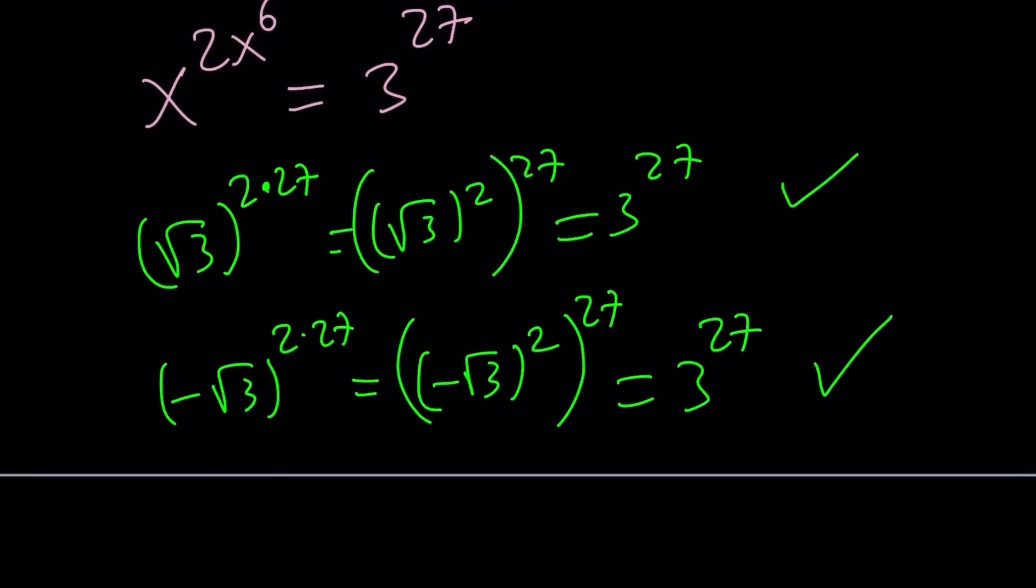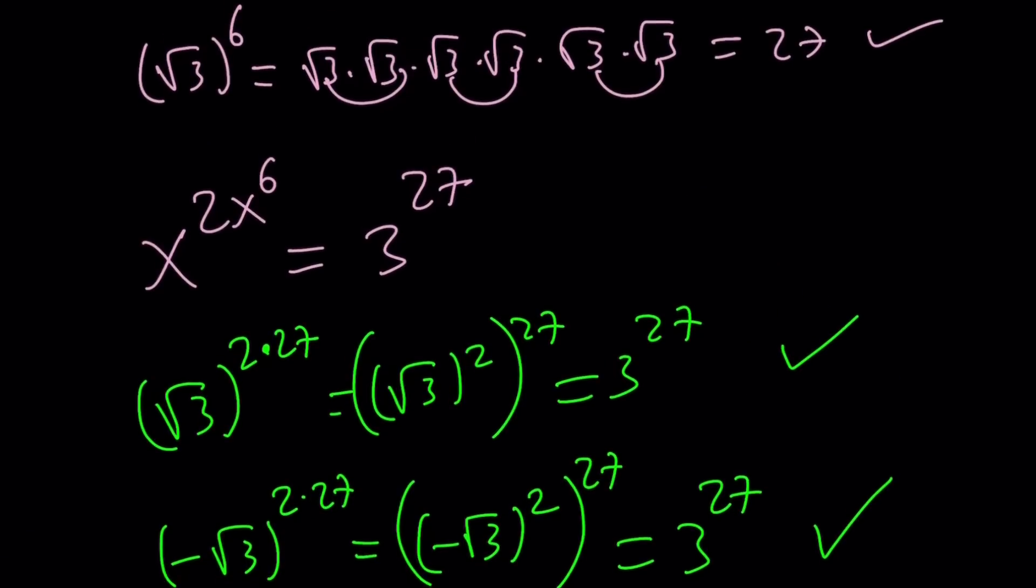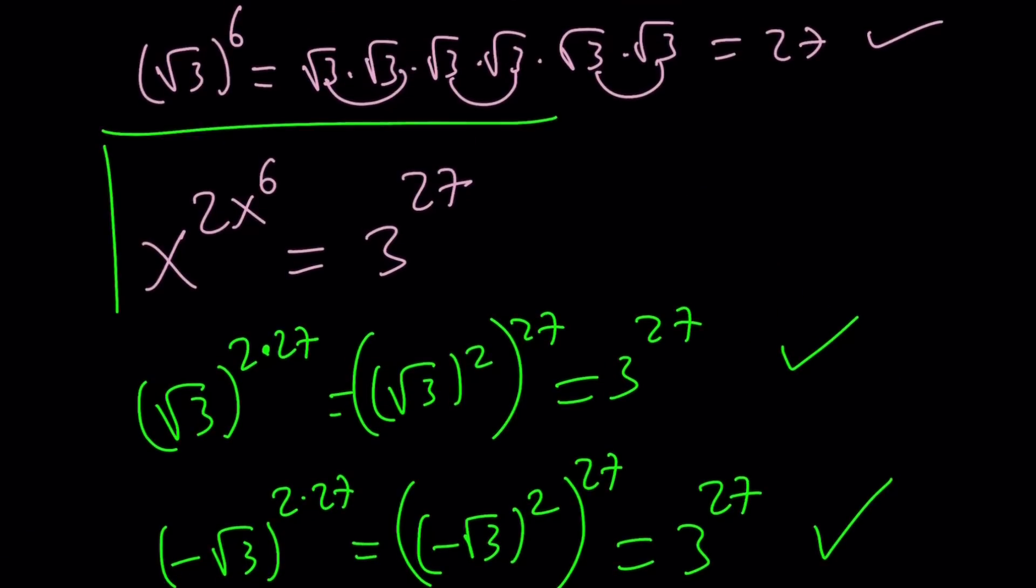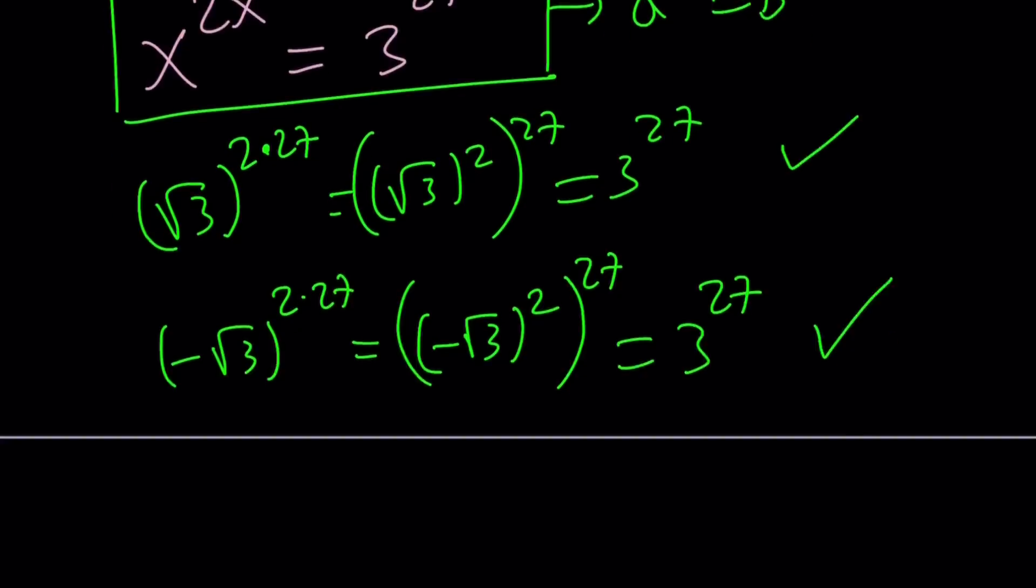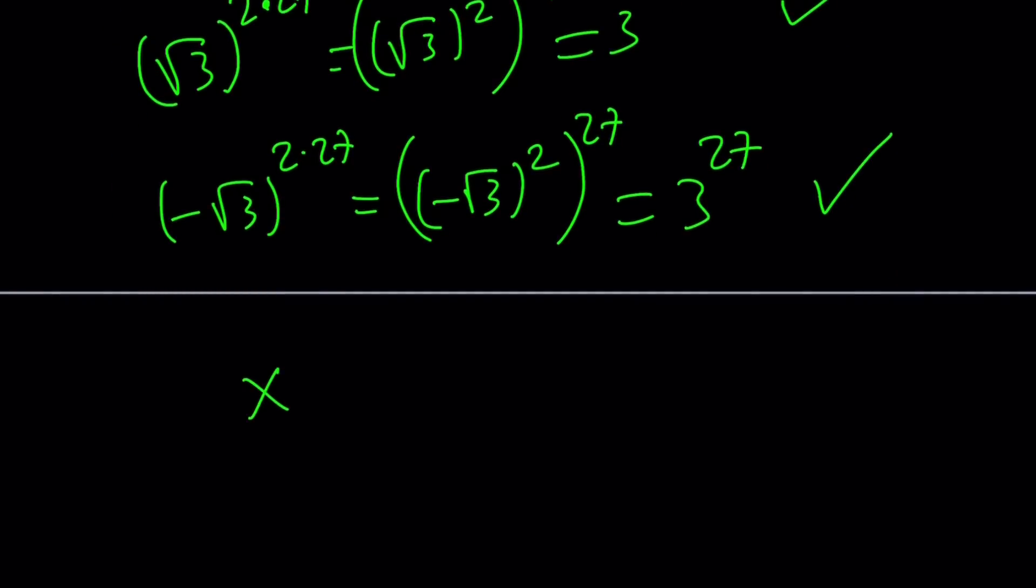So, to keep a long story short, the main idea is when you get an equation like this, bring it into a format like a to the a equals b to the b, and then go from there. Now, what happens if you don't get that format? Like, what if I get something like x to the power x equals 4? There's also a way to solve it, which is by using a special function. And we can talk about it later.